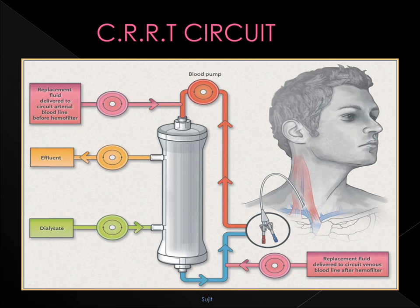Venous blood is removed from the circulation through one lumen of a double-lumen large-bore catheter and passes through a peristaltic pump, which generates the perfusion pressure that drives ultrafiltration of plasma water across a biosynthetic hemofiltration membrane, thus removing volume. The pressure difference between the blood and ultrafiltrate causes plasma to be filtered across, producing solvent drag for small and large molecules across the membrane. The ultrafiltrate containing solutes must be replaced by substitution fluid, which must have near-physiological levels of electrolytes and buffer and should be sterile.